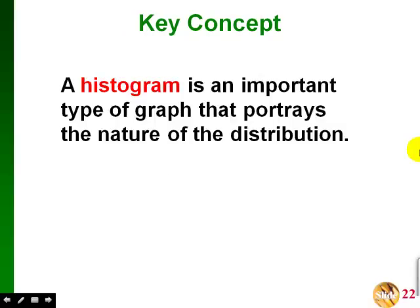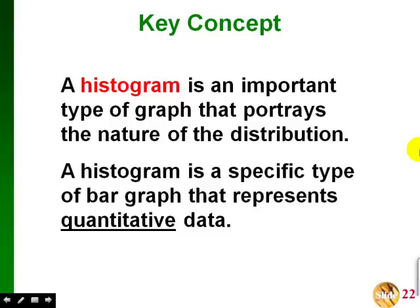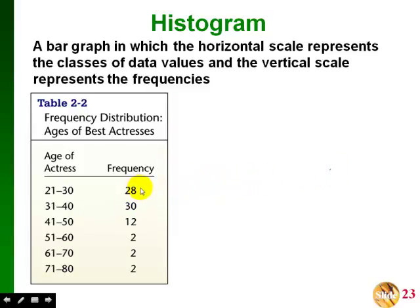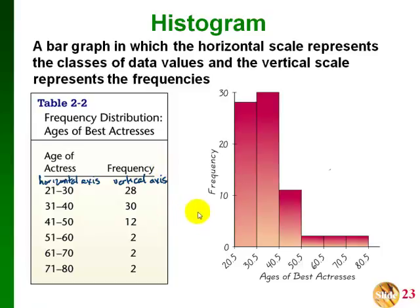Section 2.3 is about histograms. A histogram is an important type of graph that portrays the nature of the distribution, and it is a specific type of bar graph. In this course, we use histograms to represent only quantitative data. A histogram is a bar graph where the horizontal scale represents the classes of data values and the vertical scale represents the frequencies. If we already have a frequency distribution, all we have to do is list the classes along the horizontal axis and the frequencies along the vertical axis.